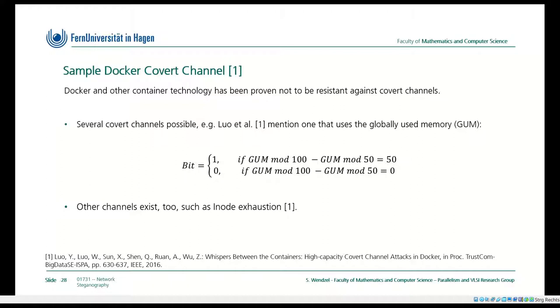There are other channels that can be exploited, such as inode exhaustion. Every file has an inode under Unix derivatives and similar systems like Linux and BSD. You have a limited number of inodes per file system. If you manage to exhaust all inodes by creating an extremely high number of files, then a container can check by testing the creation feasibility of a new file whether the inodes are exhausted or not.